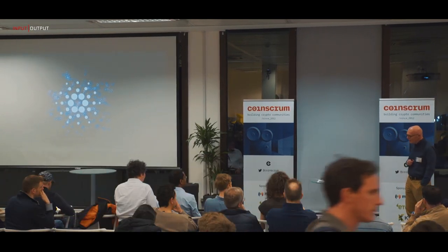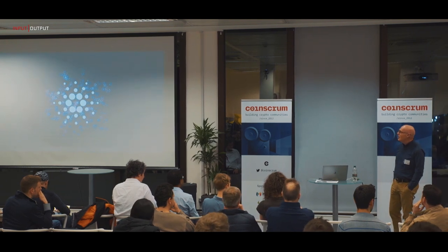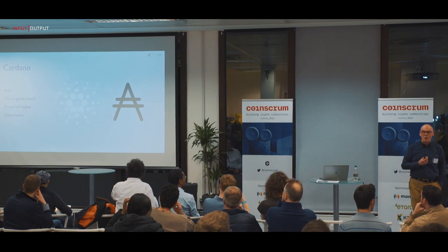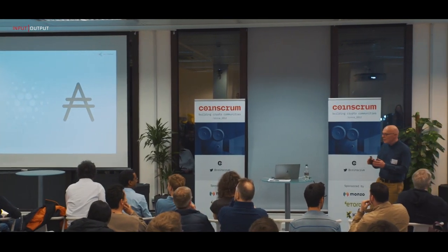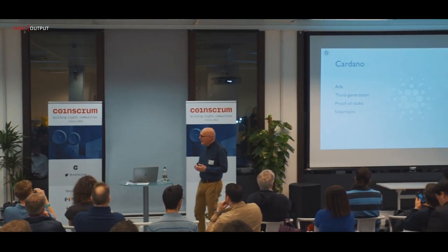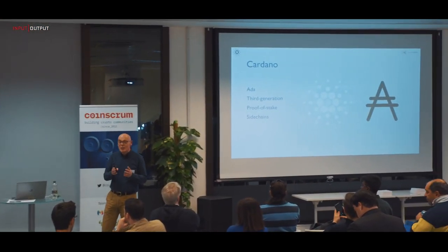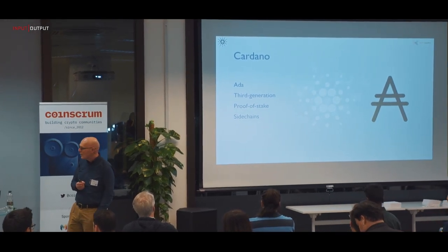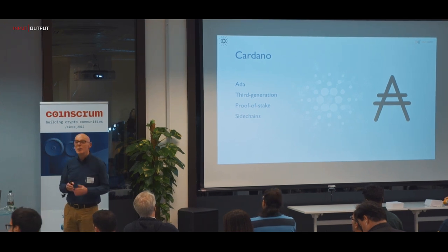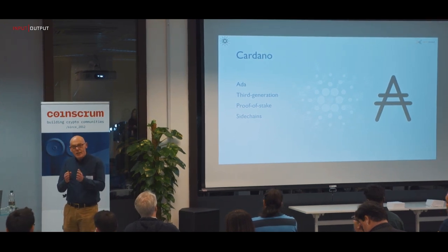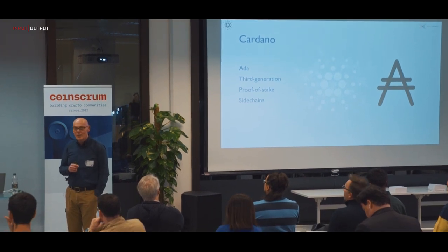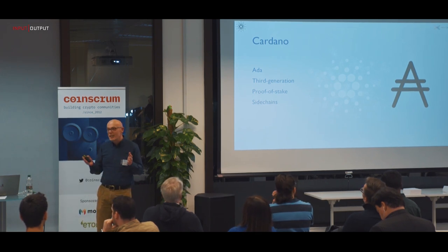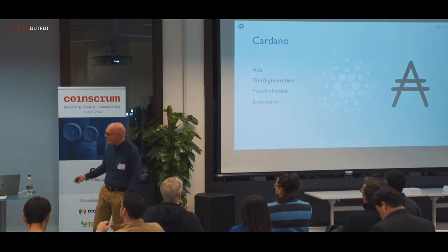If you want to characterize Cardano, it's a third-generation blockchain. Bitcoin was first, Ethereum second. The third generation stresses two aspects: it's based on proof of stake rather than proof of work, and it adds a notion of side chains to the main chain. The currency that lives on Cardano is ADA.